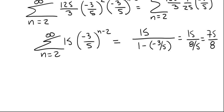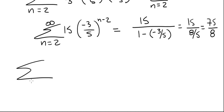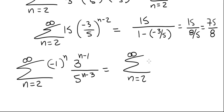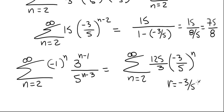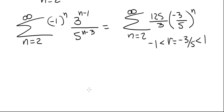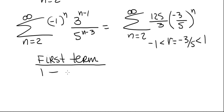Now we can do this in a slightly different way. Looking at our series from 2 to infinity — (125/3) · (-3/5)^n — this is not in standard form, but we recognize it as a geometric series with r = -3/5, which is between -1 and 1, so the series converges. Another way to find the sum without converting to standard form is to use: first term of the series divided by (1 - r).